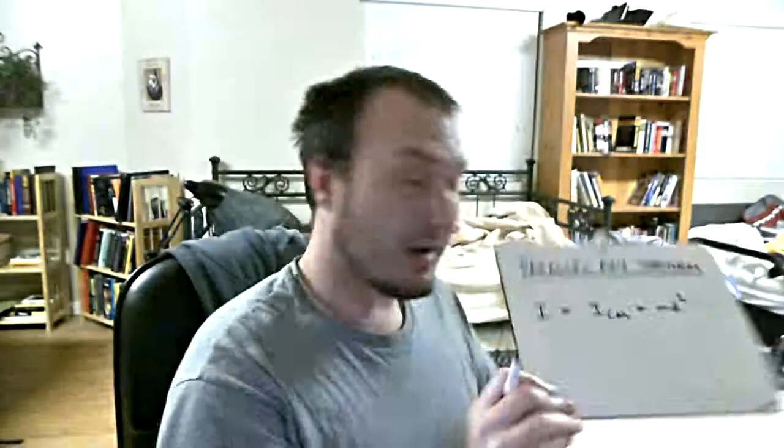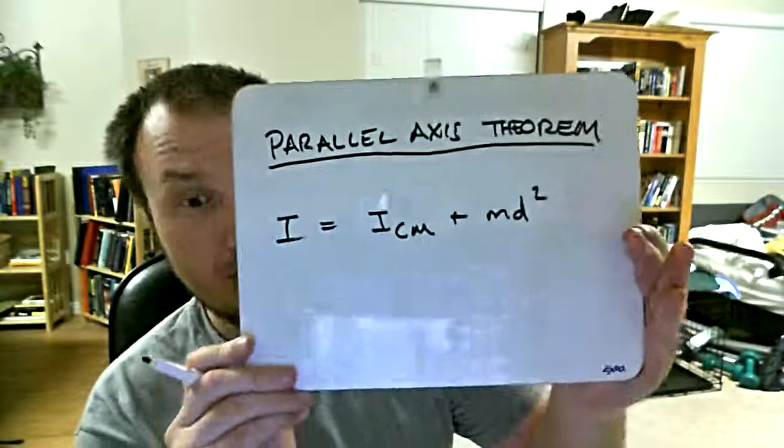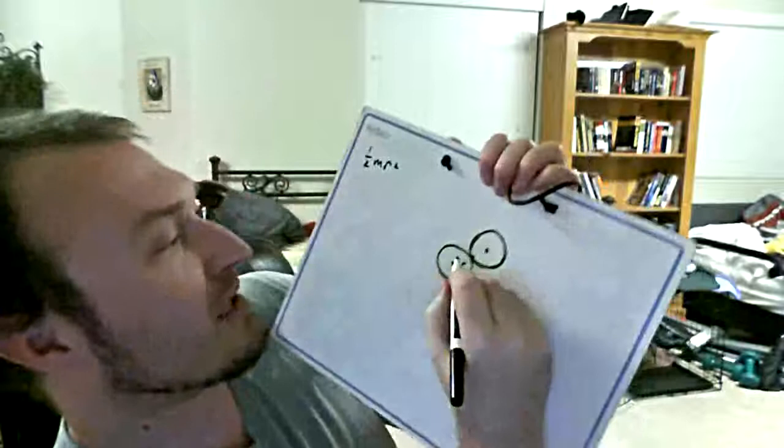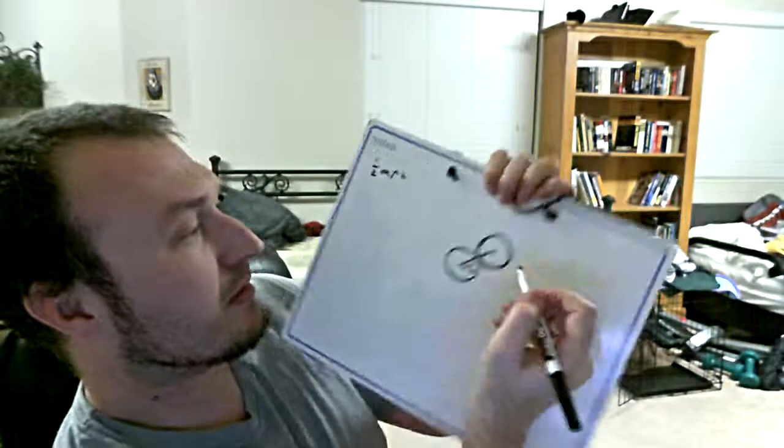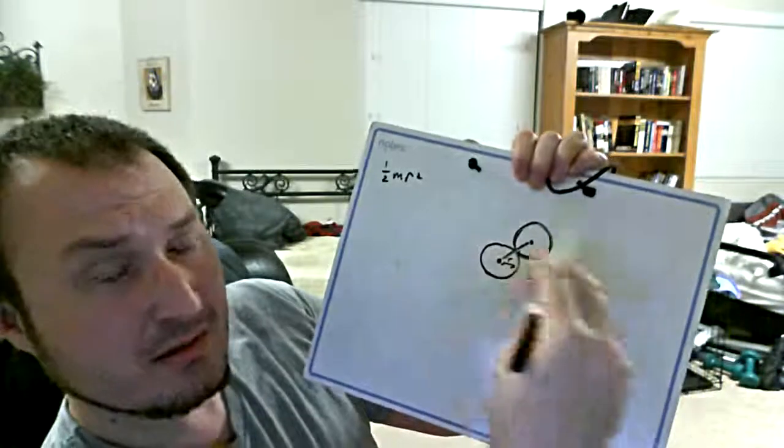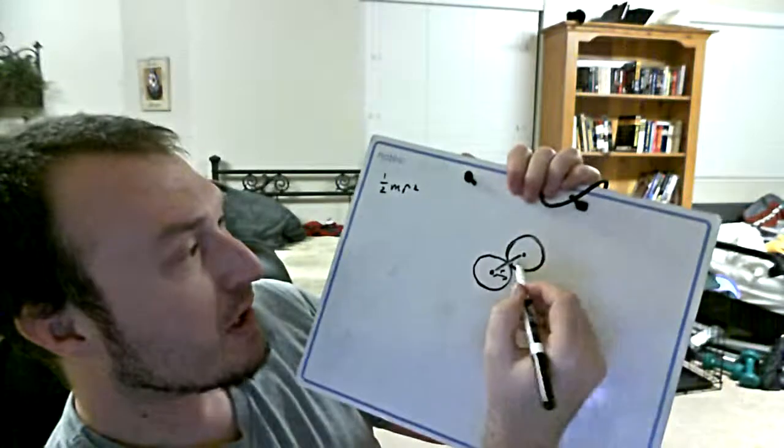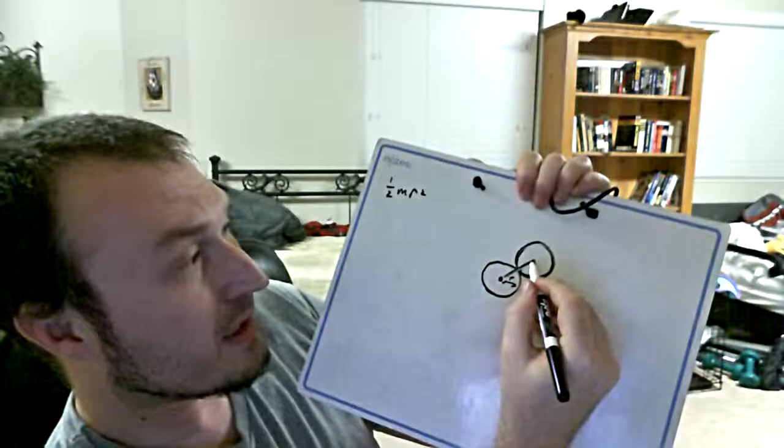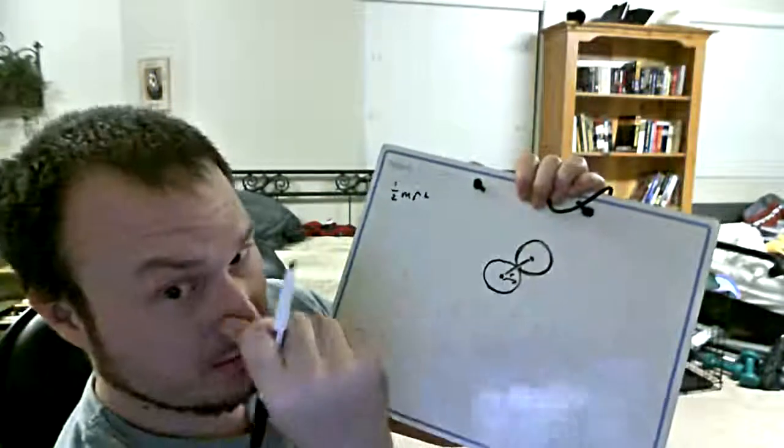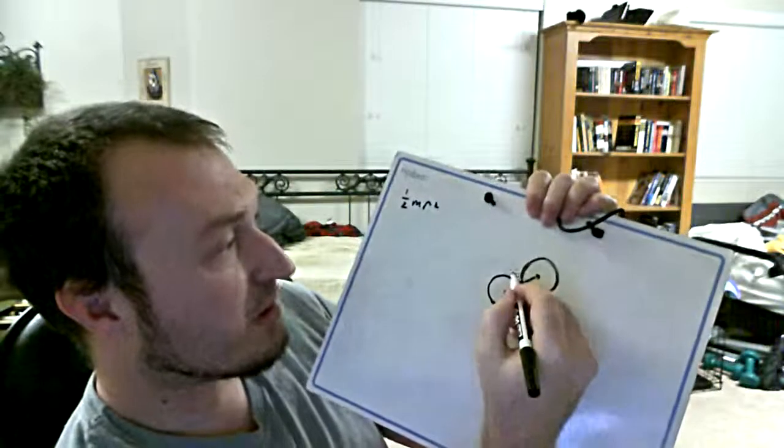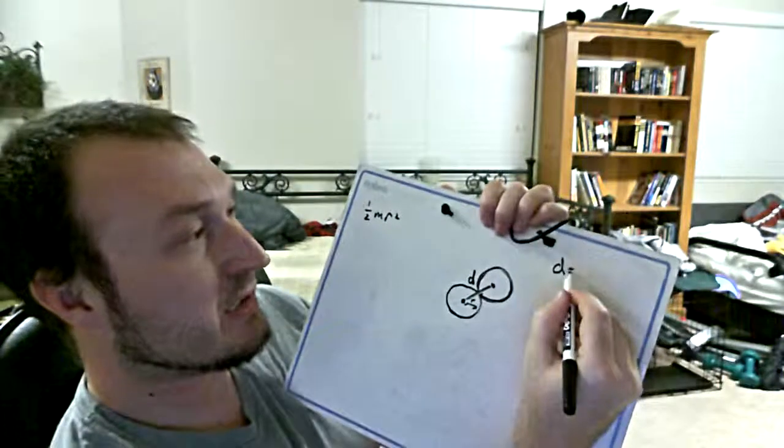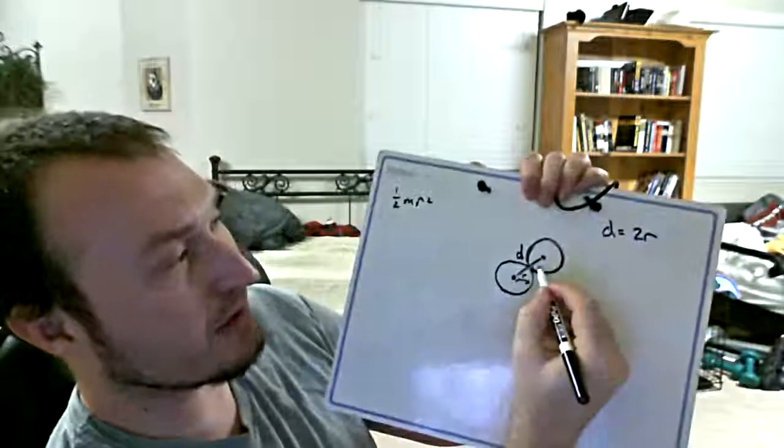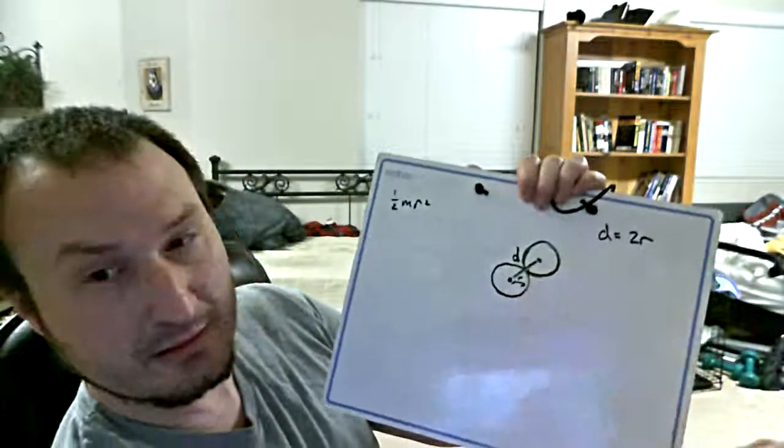Incredibly important for the physics GRE. If you don't have this memorized, memorize this right now. Right now. So, to solve this problem, we basically have a distance from the center of the problem where we're taking the moment of inertia to the center of mass of the object that we're calculating. And so, I'm going to call that distance D. In our problem, D equals 2R because this is R and this is R. Right?